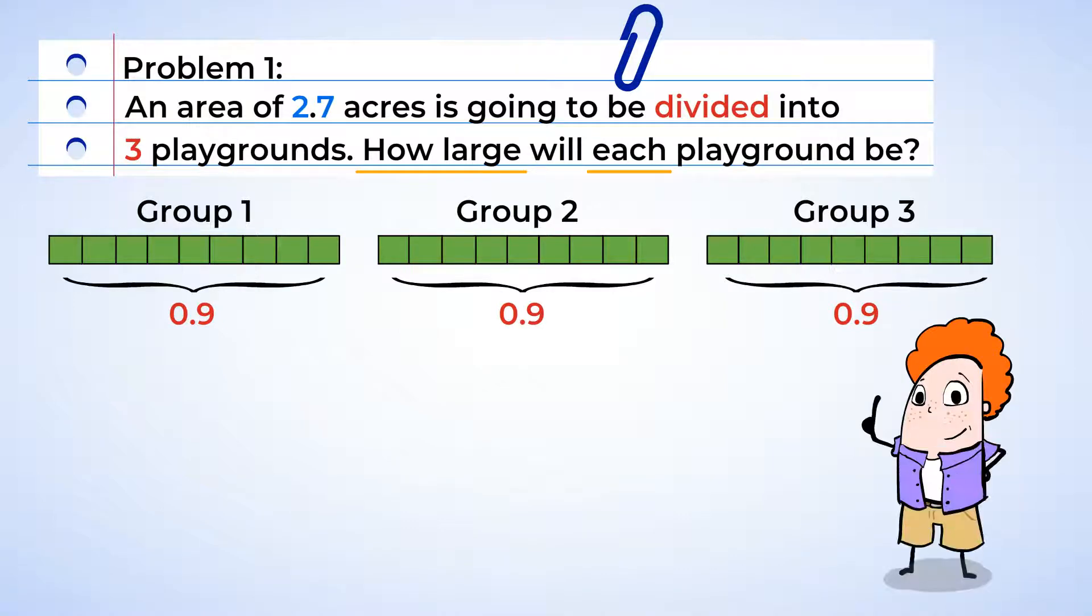But let me ask you something else. Can you see a different way to solve this problem? When you saw 2.7, did you think of the number 27? We know that 27 divided by three is nine, right?